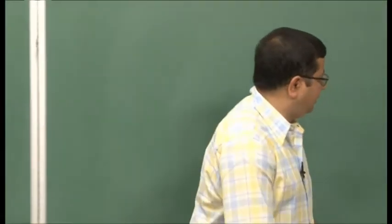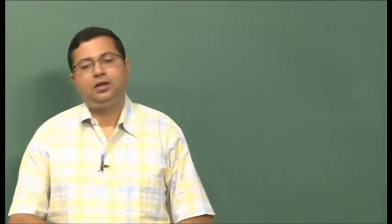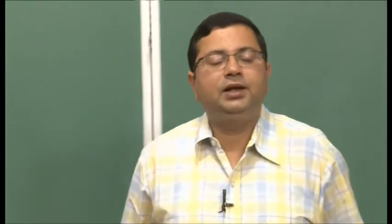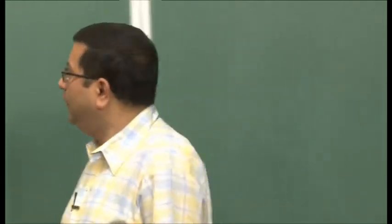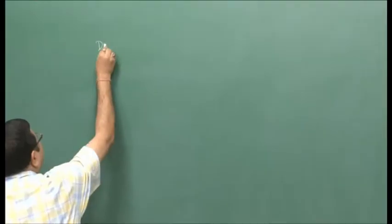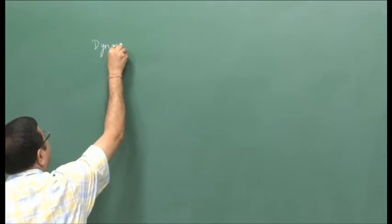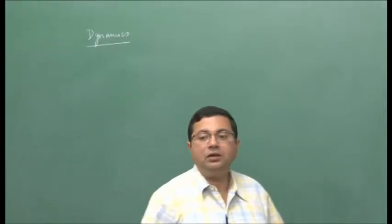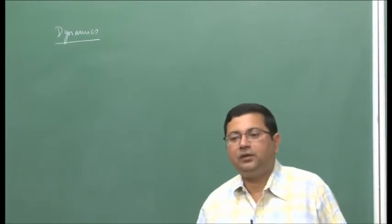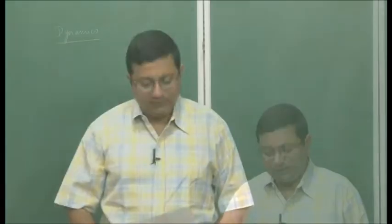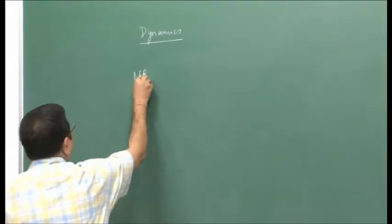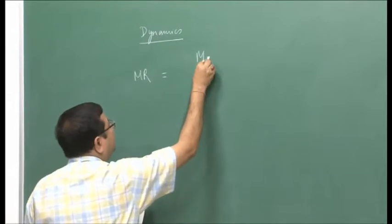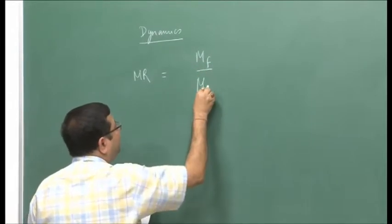Welcome to this lecture on rocket propulsion. Before we proceed, let us first recap what we have discussed so far. We have been discussing vehicle dynamics for the last few lectures, focusing on single stage rockets, and we have defined some parameters. One such parameter is the mass ratio, which is given by the final mass divided by the initial mass.